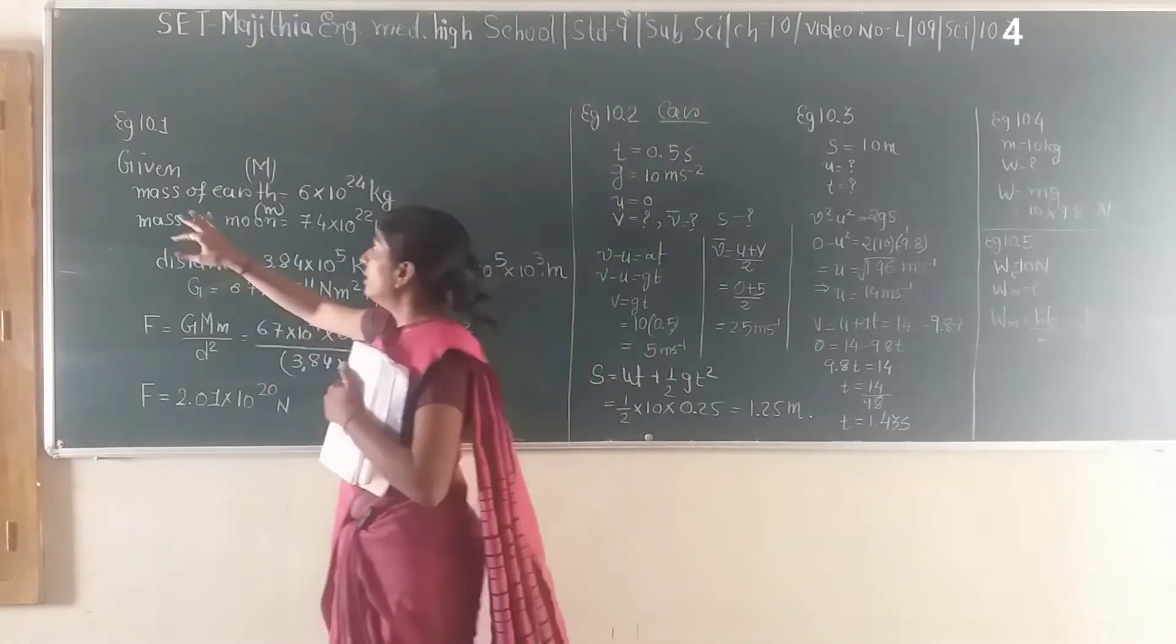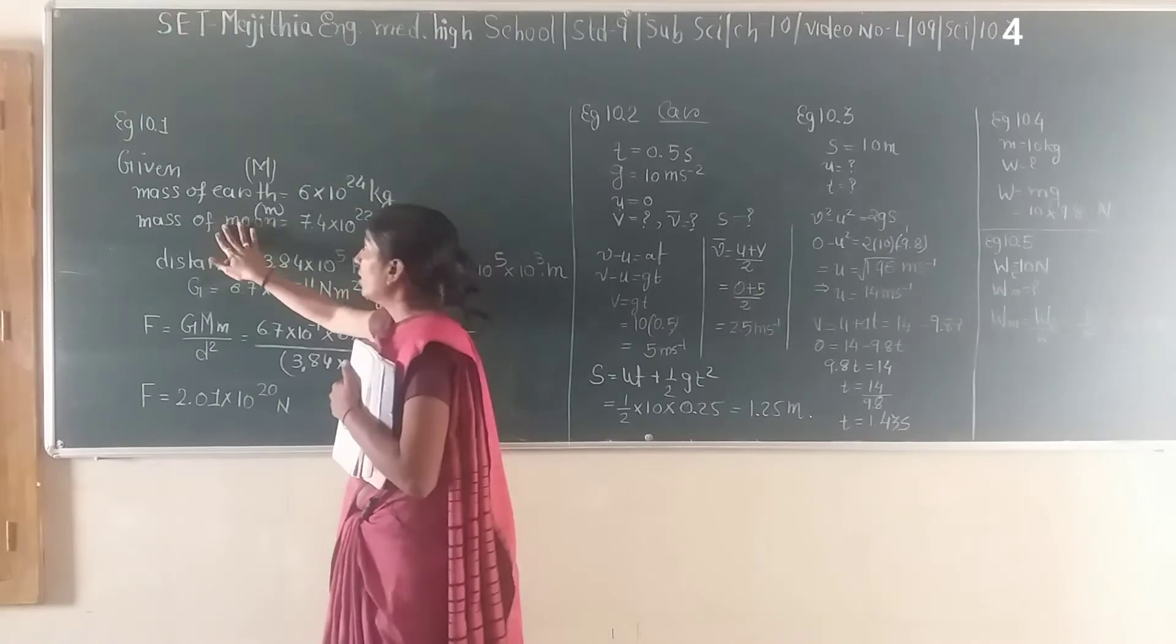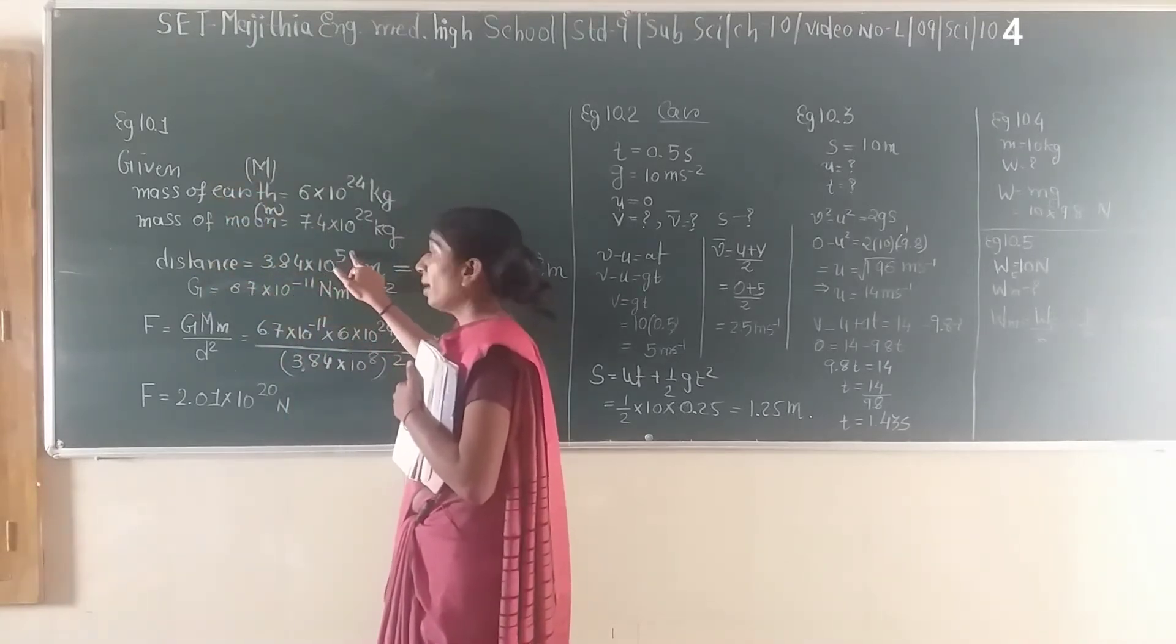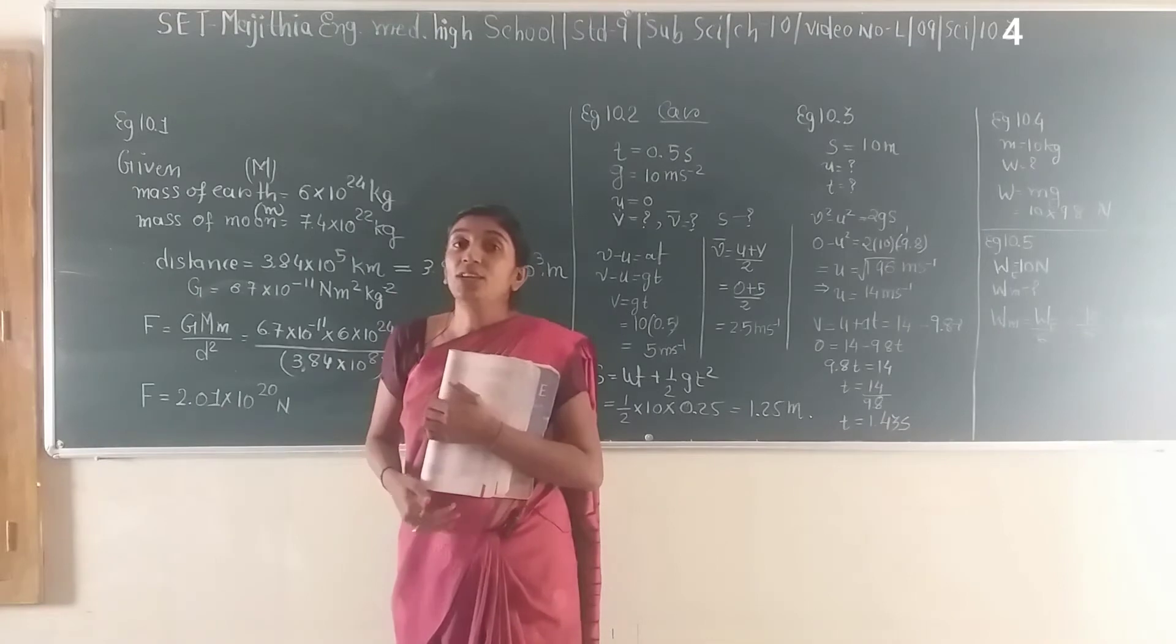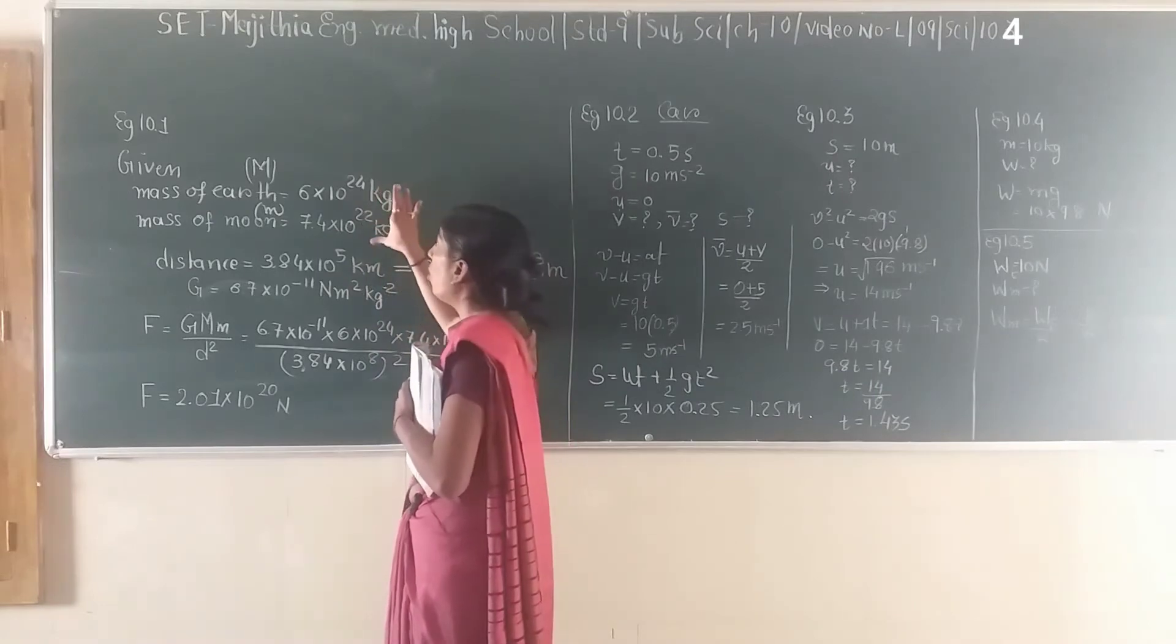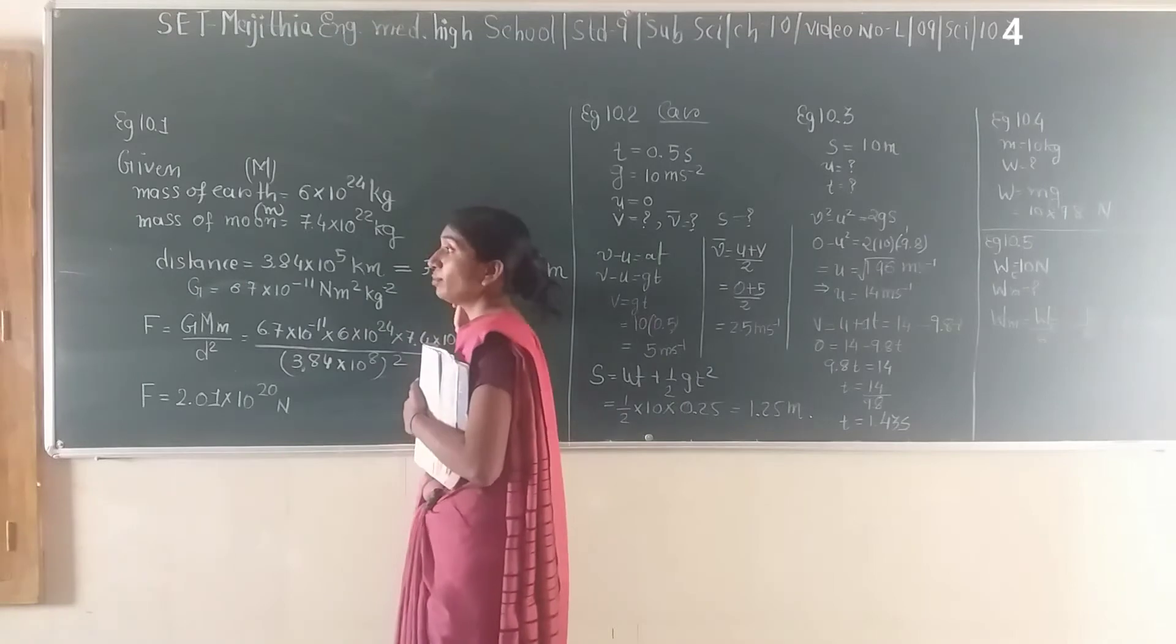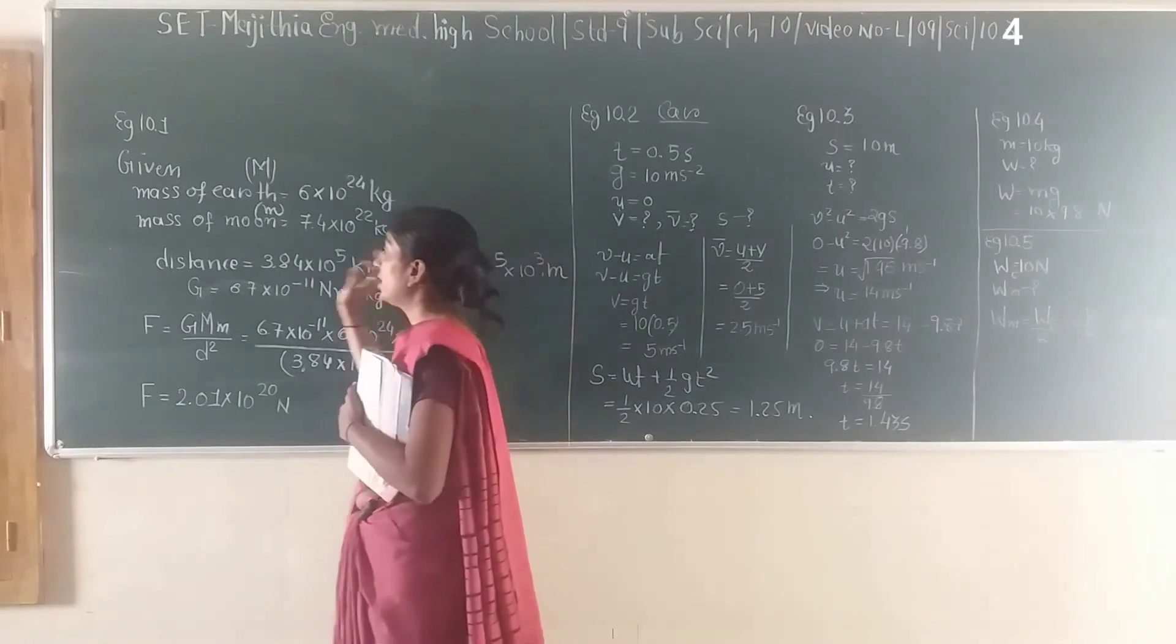So whatever is given to us: mass of Earth is 6 × 10²⁴ kg, mass of Moon is 7.4 × 10²² kg, distance between Earth and Moon is 3.84 × 10⁵ kilometers. We know we want all quantities in SI units, so we cannot take some in grams and some in kilograms. Distance should be in meters, so we'll convert kilometers to meters by multiplying by 1000.